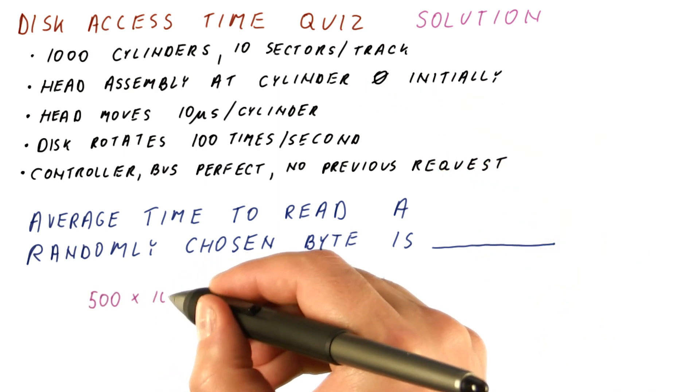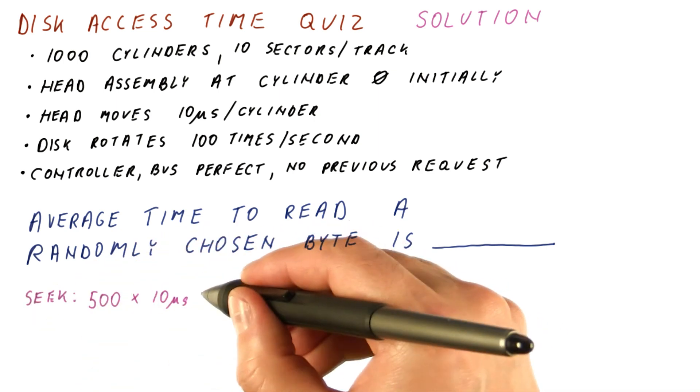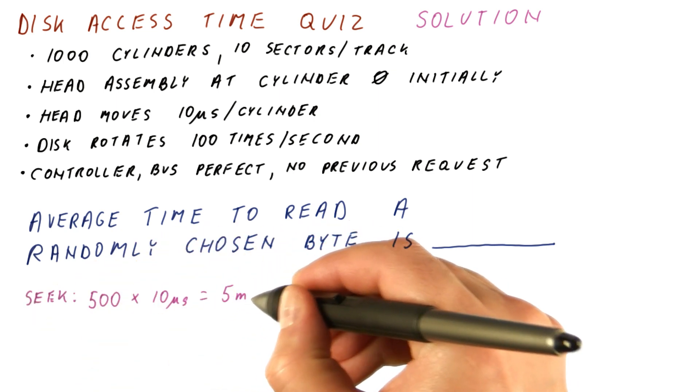Times 10 microseconds per cylinder. So our seek will take us 5 milliseconds.